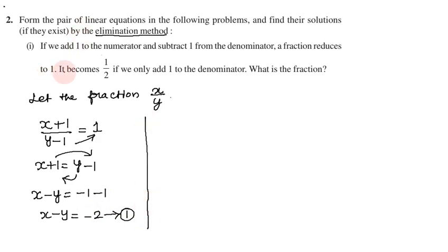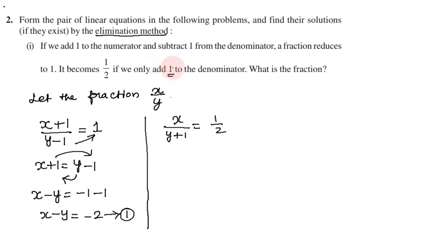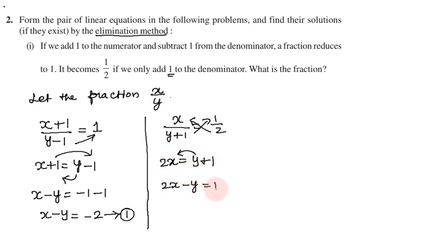Second condition: it becomes half if we add 1 to the denominator. So x/(y+1) = 1/2. Cross multiply: 2x = y + 1, which gives 2x minus y equal to 1. This is equation number 2.